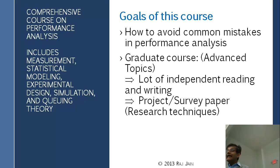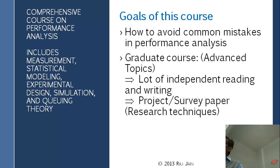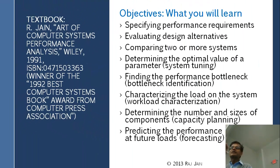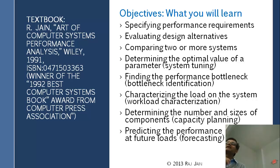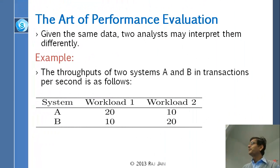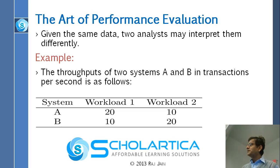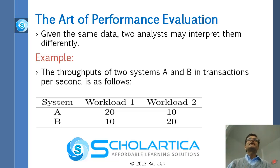People think that performance analysis is mathematics, and in mathematics there is only one answer - one plus one is two. But in performance analysis, there will be situations where the answer will be very different for the same data, for the same system. Here is an example: throughputs of two systems A and B in transactions per second. On workload one, A gives 20 and B gives 10 (higher is better). On workload two, A gives 10 and B gives 20.